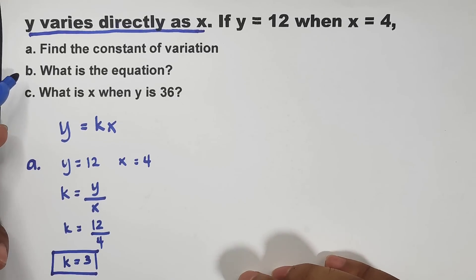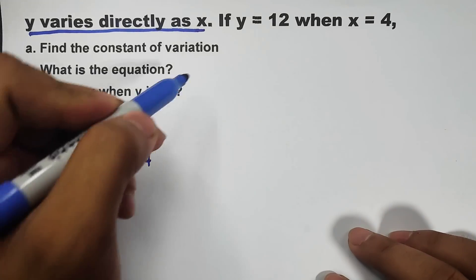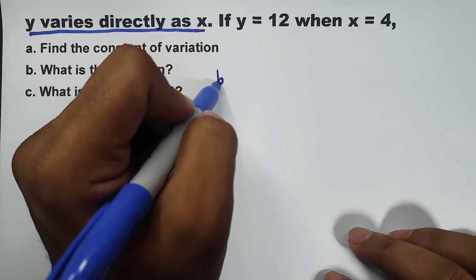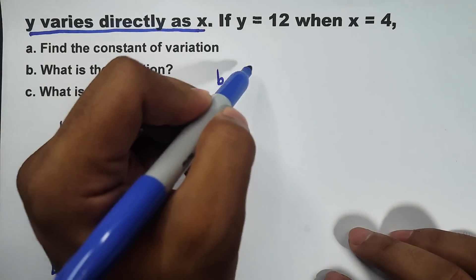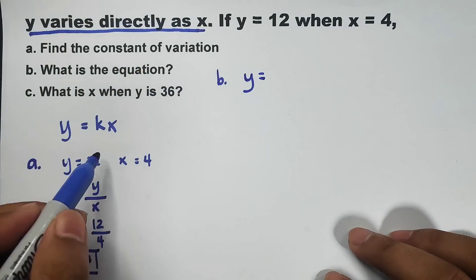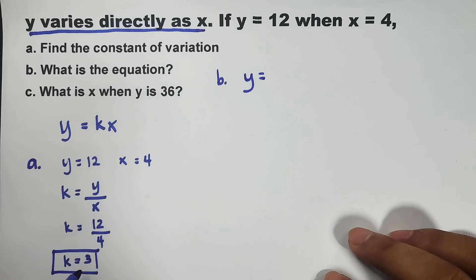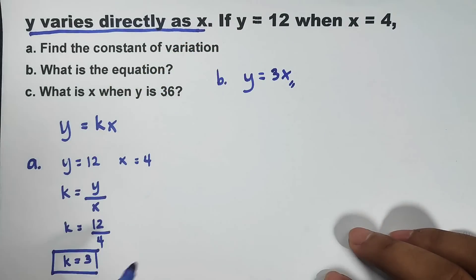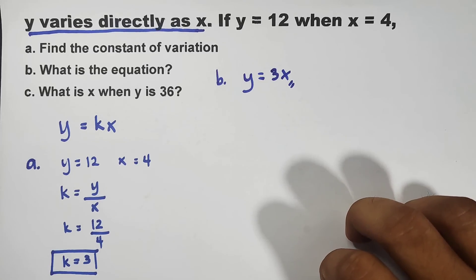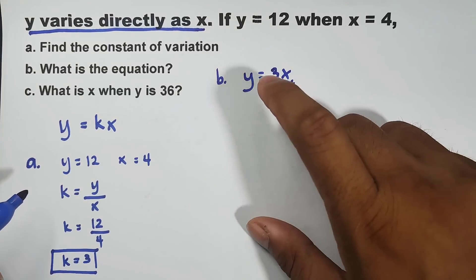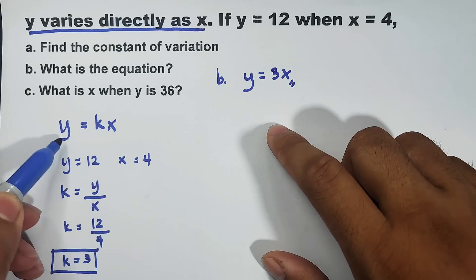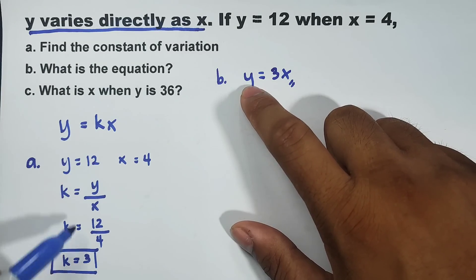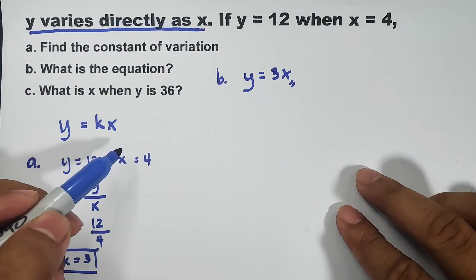Now, let's move on to letter B. What is the equation? For the equation, since we are done finding out the value of k, to answer letter B, what you need to do is to use this, y equals your k times x. Your k equals 3, meaning, substitute 3 as k, then x. This is now the equation of the variation: y equals 3x. No further solution using the general equation. Your k is 3, and then x. That's it.